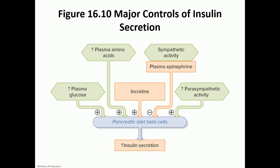What stimulates beta cells to make insulin besides high plasma glucose levels? Basically the fact that you ate: increased glucose, amino acids, or incretins. Incretins are enteroendocrine hormones from chapter 15 — like gastrin, CCK, and GIP — whose presence signals that you just ate, stimulating the beta cells. The parasympathetic nervous system, your rest-and-digest system, is also stimulatory. Sympathetic stimulation and epinephrine are inhibitory — when the sympathetic system takes over, it's not the time to make insulin or digest food.